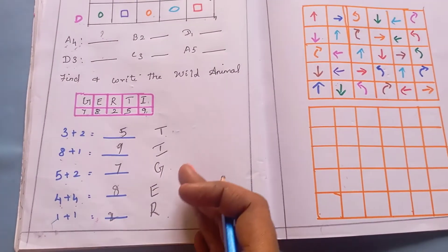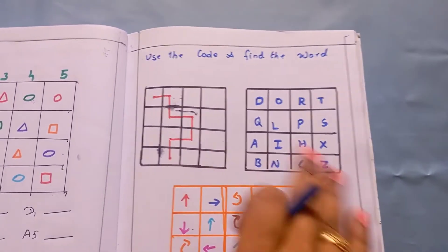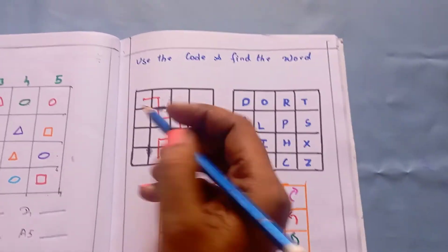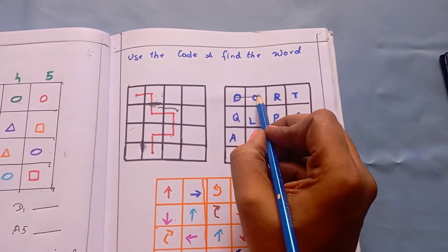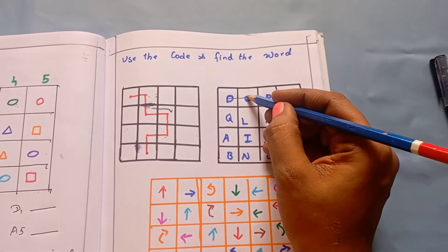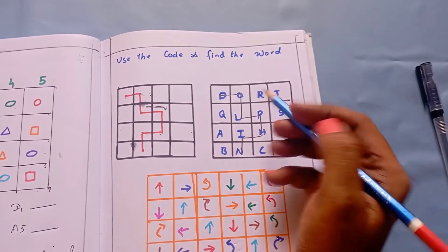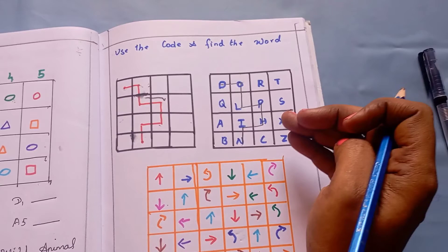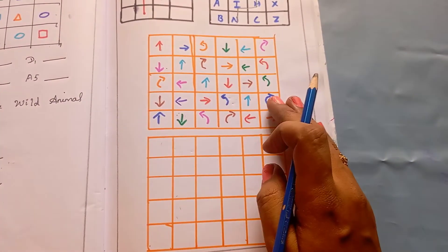The next worksheet is: use the code and find the word. In this worksheet, there are two checkboxes, and in each checkbox a direction path is drawn. Following the direction from the starting point — moving one box right, then down the second row, then right, then down, then left, then down — you find the hidden word, which is DOLPHIN. Kids follow the directional arrows to discover the hidden word.